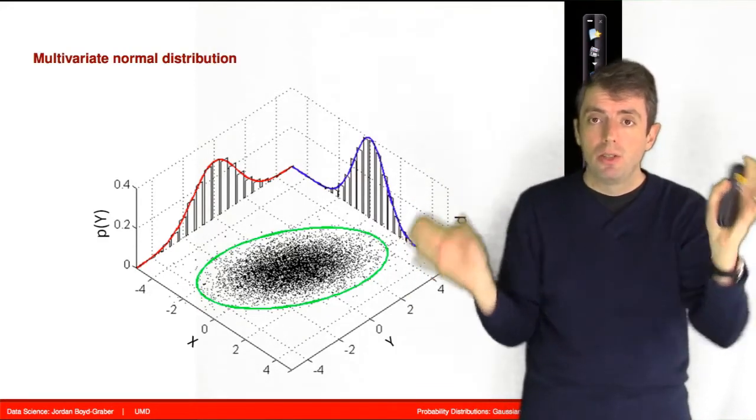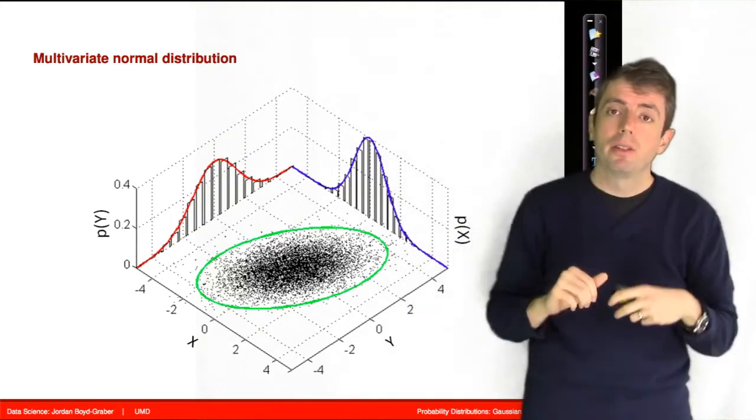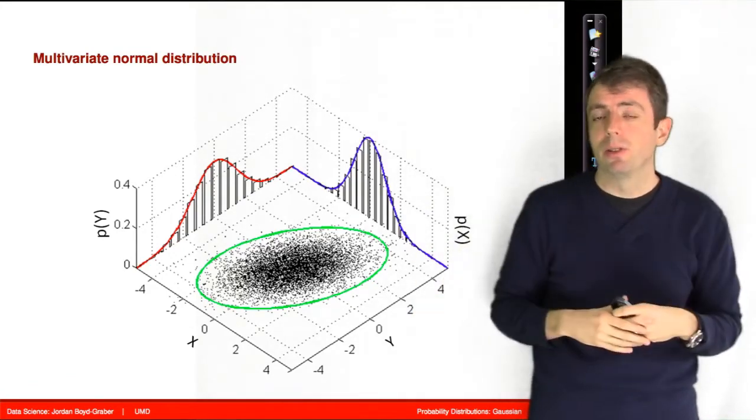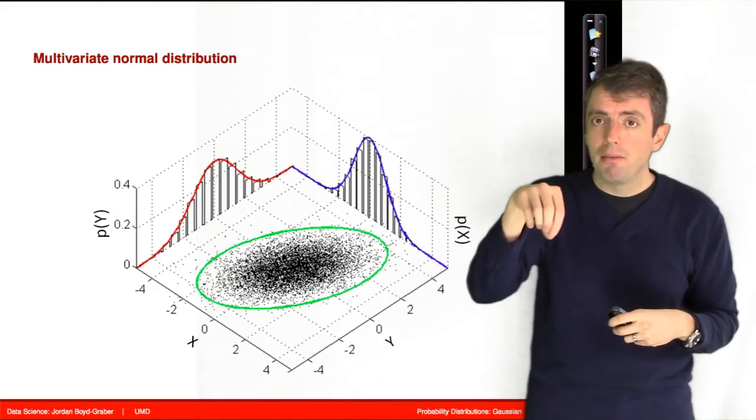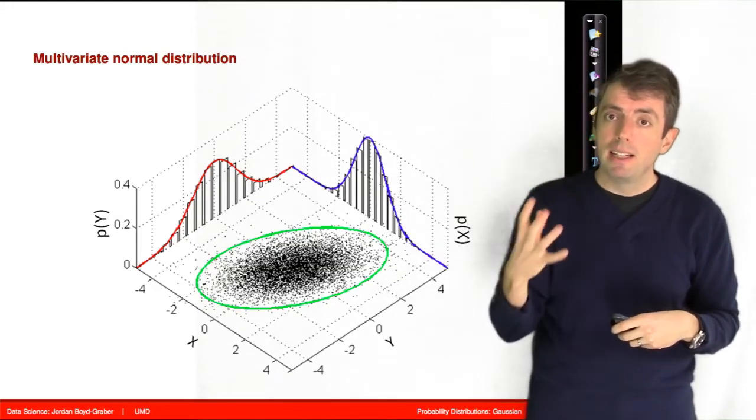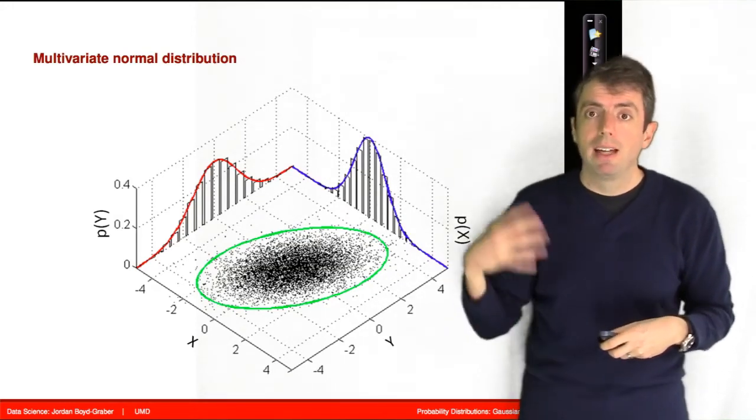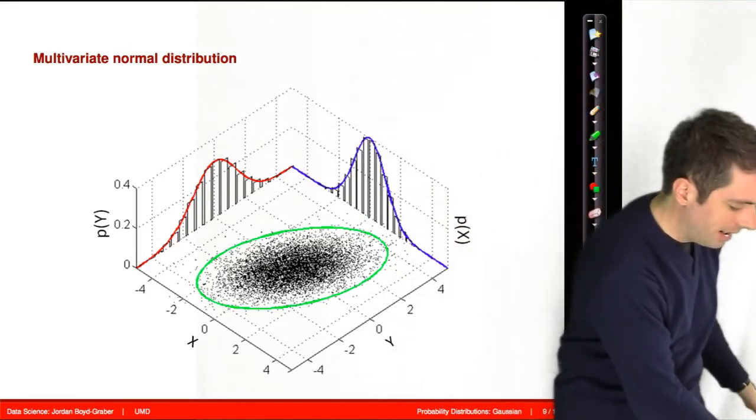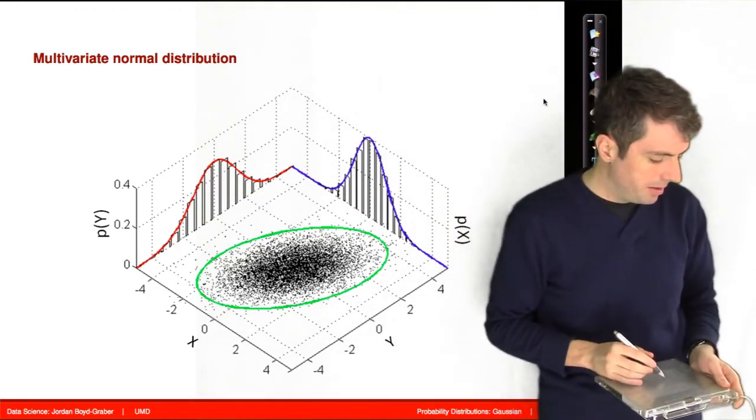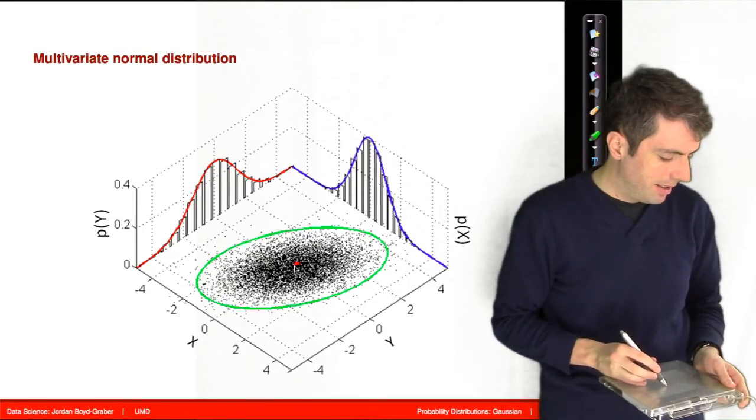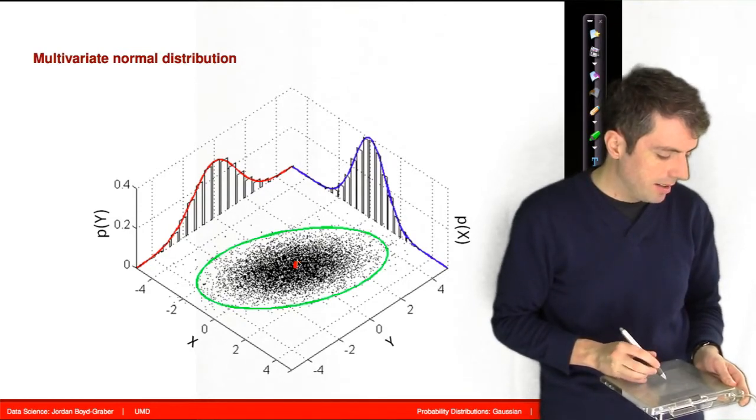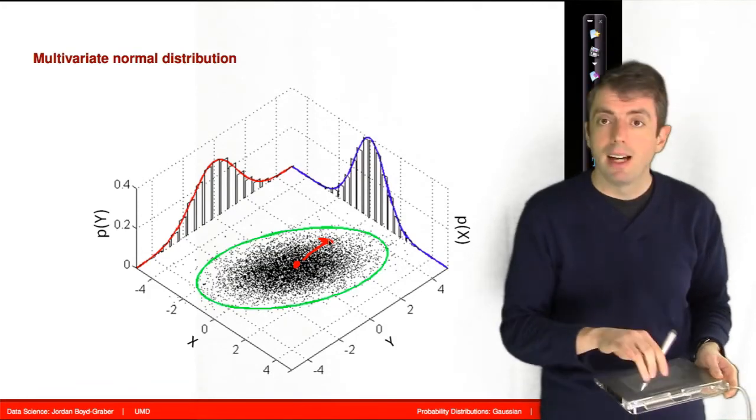If you have two dimensions and the probability is your third dimension, the height also looks like a bell. You have a lot of mass near the mean. The mean is now a vector. In this case, the vector is zero, zero. You have the mean of the distribution here, and as you get further away, the probability mass dies off.